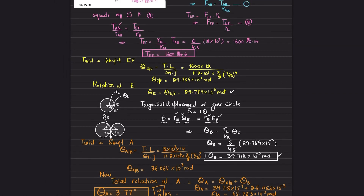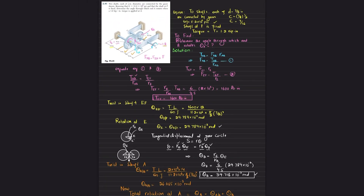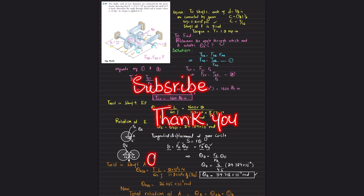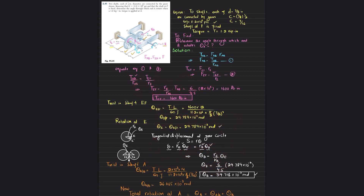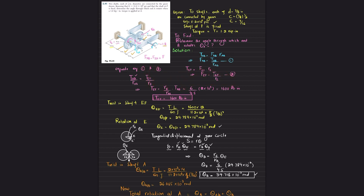So end A rotates 3.77 degrees, and that was all about problem 3.41. I hope you enjoyed this video and learned from it. If you are new to my channel, please subscribe and press the bell icon for notifications about latest videos. If you have any questions, ask in the comment section, and also try some problems and practice them — you will be able to learn. Thank you for watching.